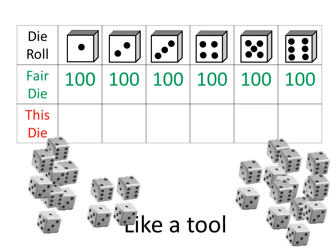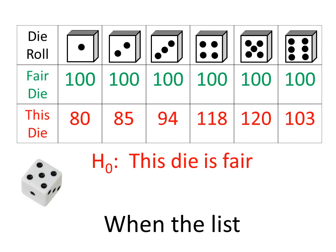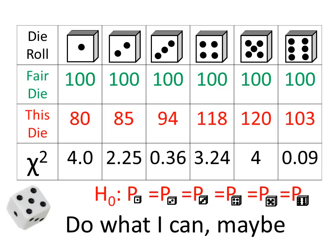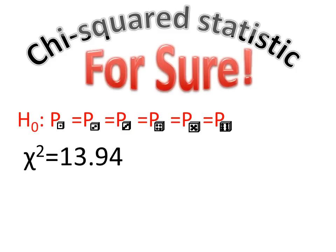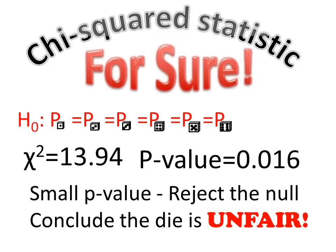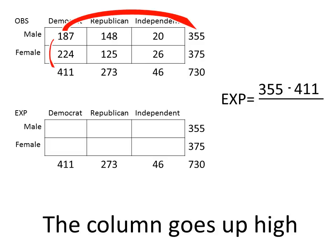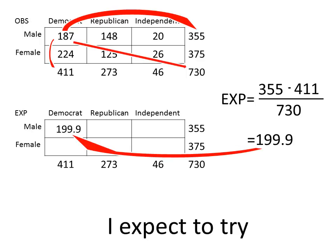Like a tool that will not take you wrong, when the list of proportions is long — do what I can, maybe, kind of squared statistic, for sure. Those row times the column goes up high, over total — I expect a try.